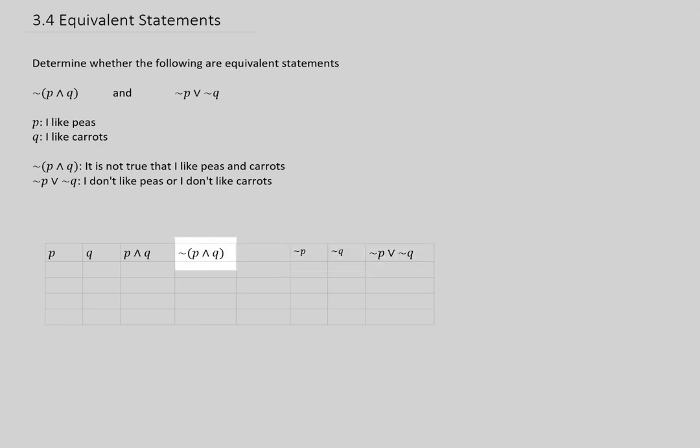So if we need not and in parentheses P and Q, then it would make sense for us to make a P and Q column here. And over here if we're comparing not P and not Q with a disjunction, it would make sense for us to have a not P column and a not Q column. Okay, let's fill this thing out.